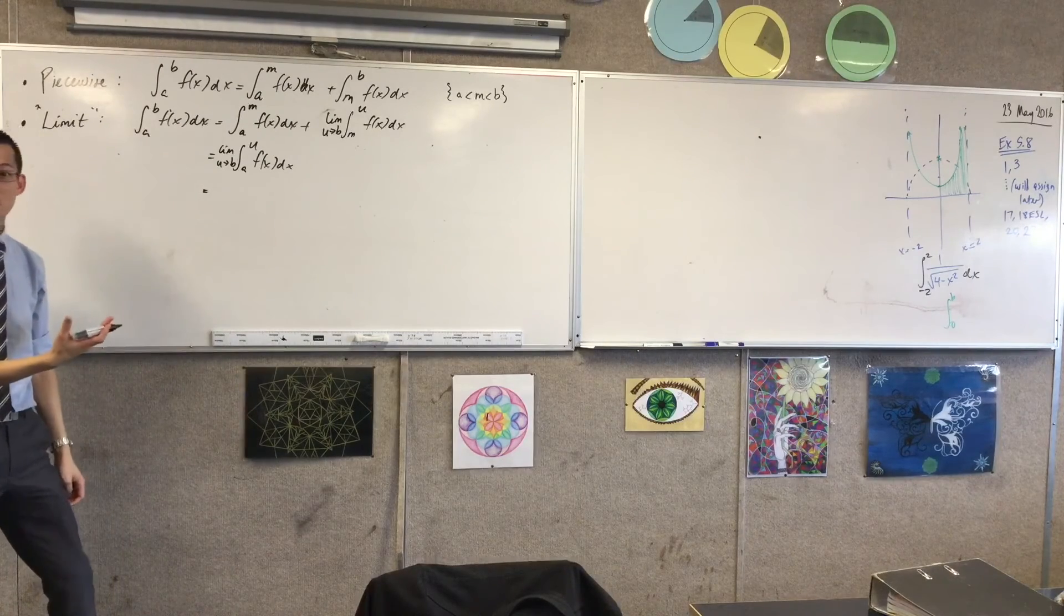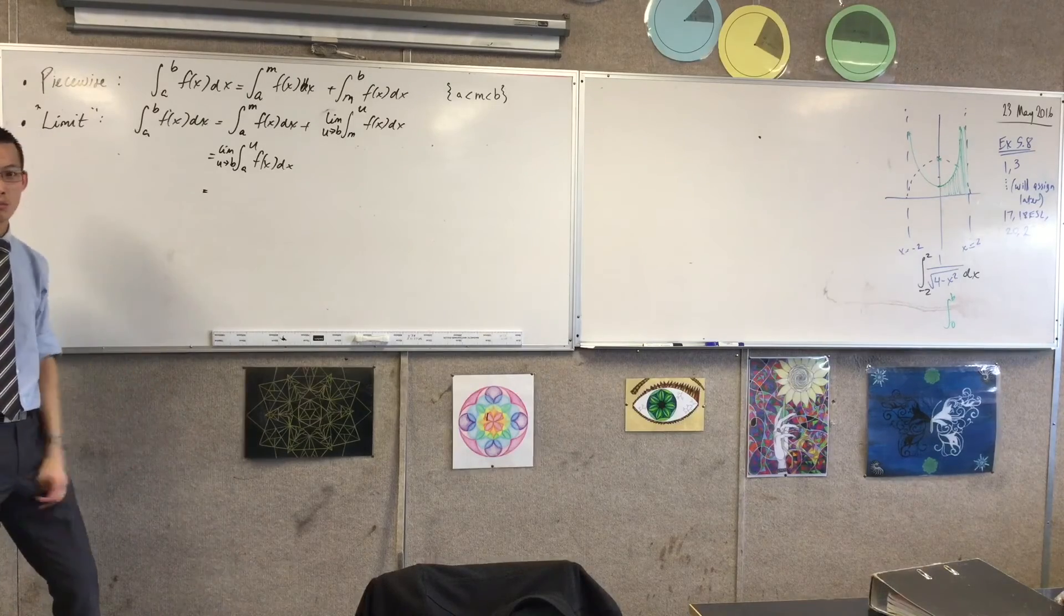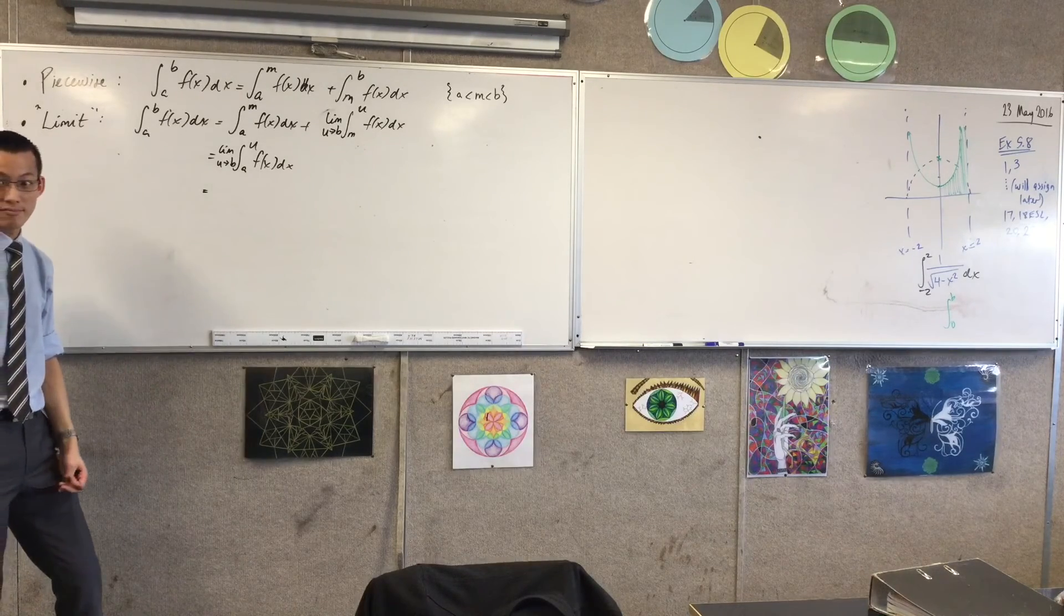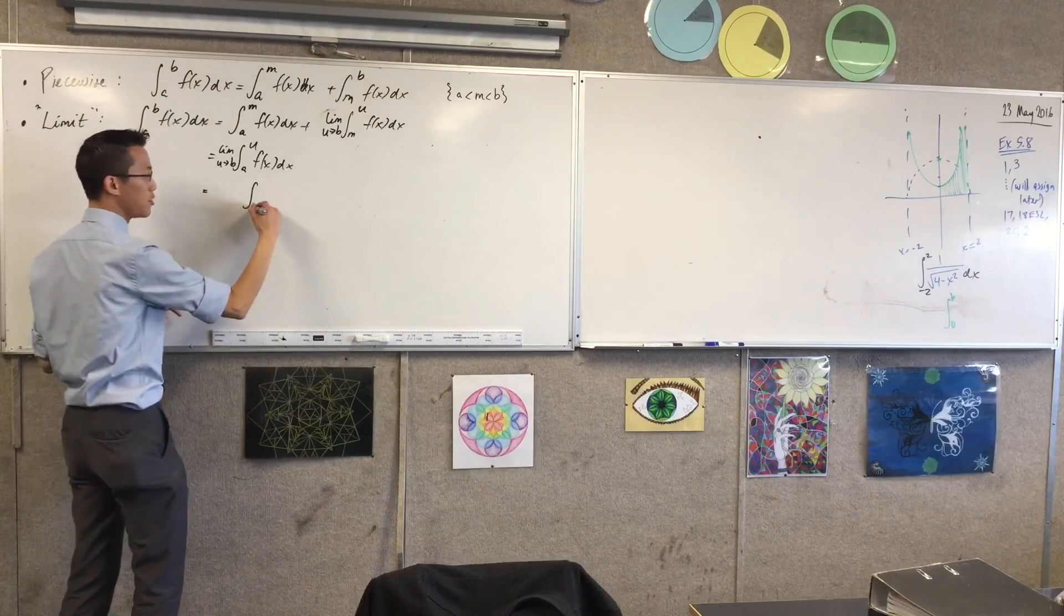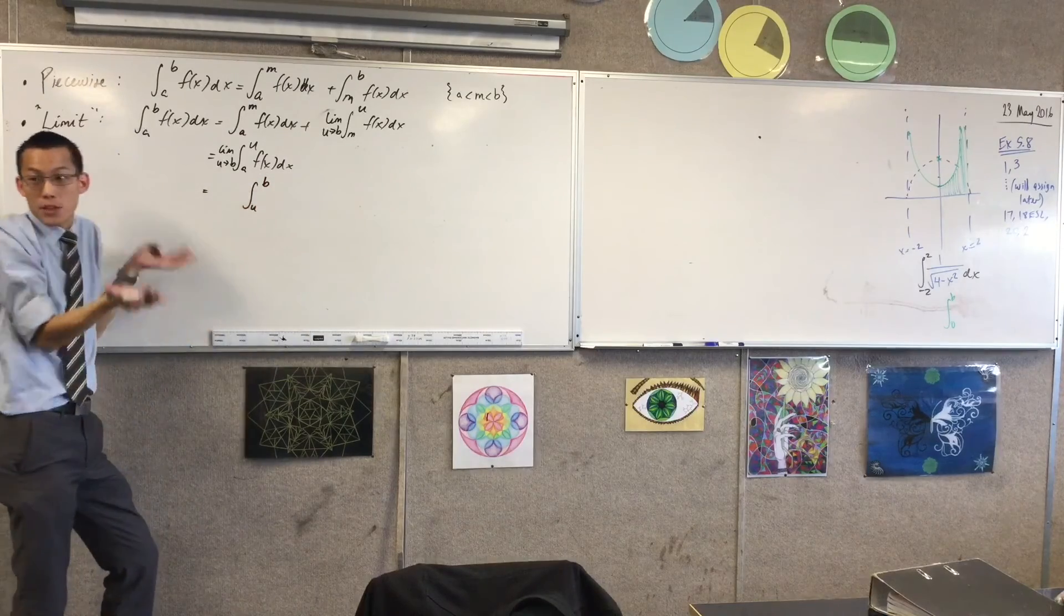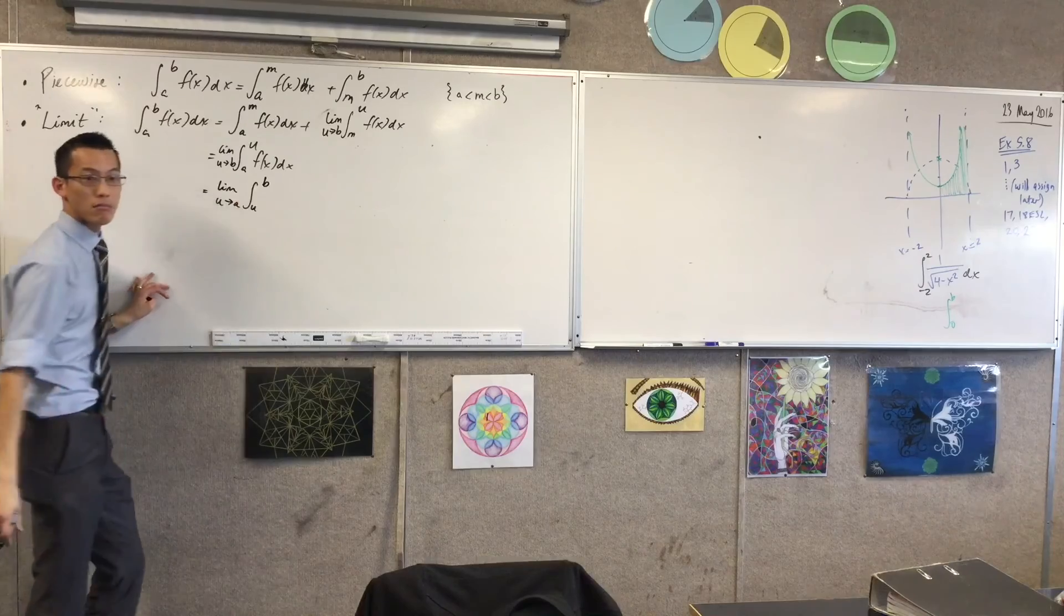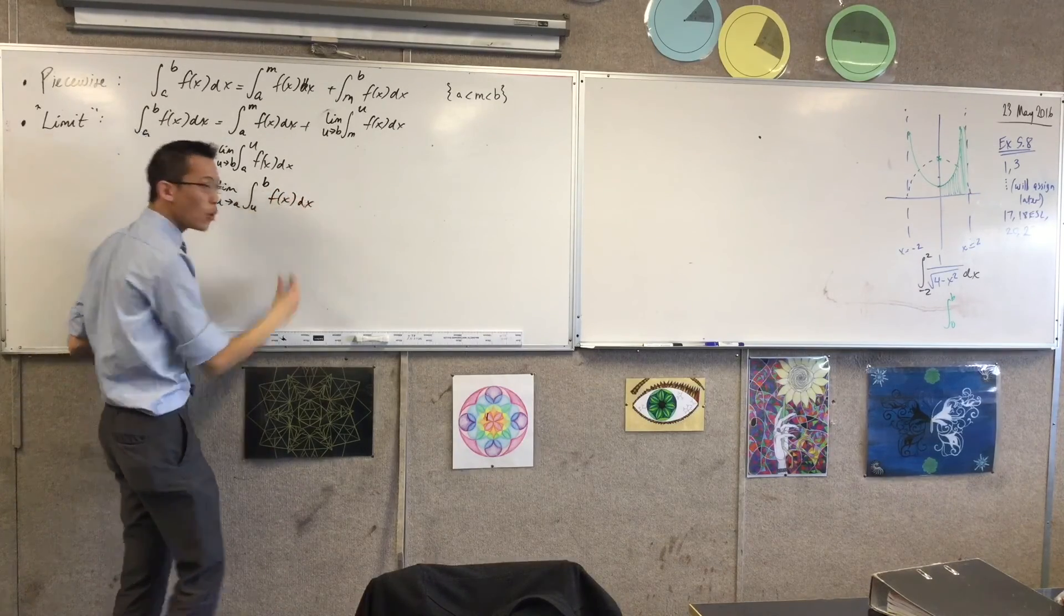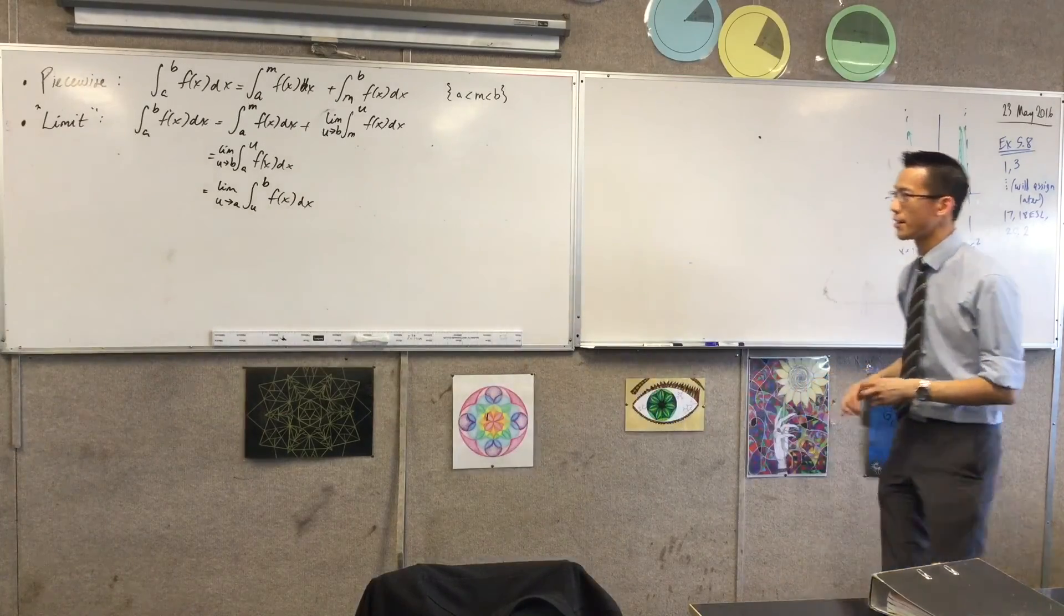Or one more way, if it's not the upper boundary that's causing you problems, if it's the lower boundary that's causing you problems, what should I do? Yeah, that's right. So I'm going to go from U, I'm going to make that the thing that approaches something else. The B is fine, if it's well-defined, and you say, well, this time, I want the limit to approach A, right? So all of these things are the same. They're all different ways of slicing up the same pie.